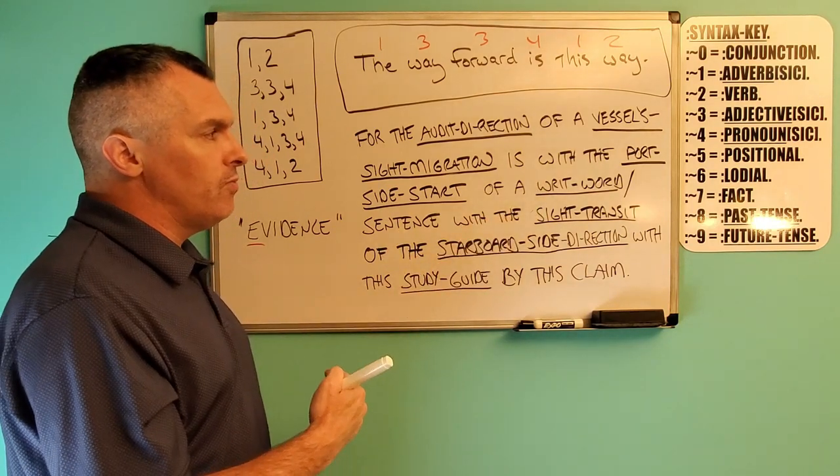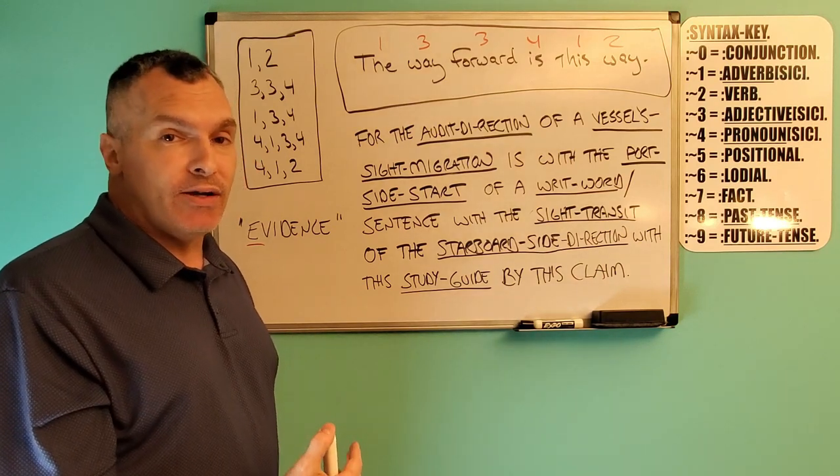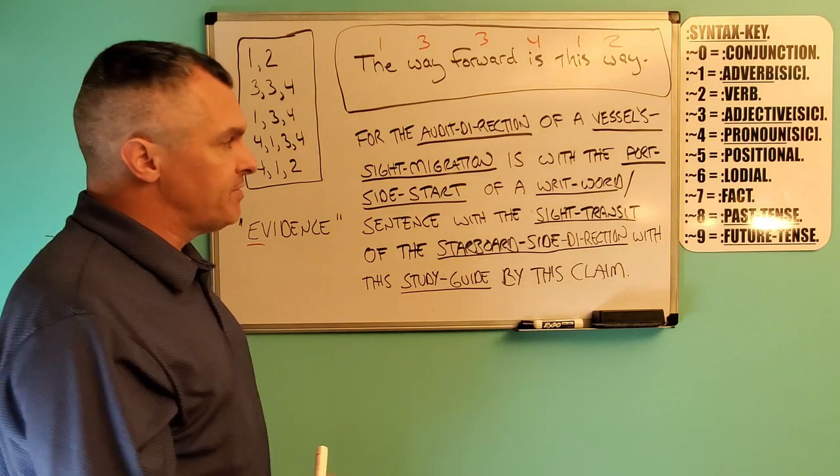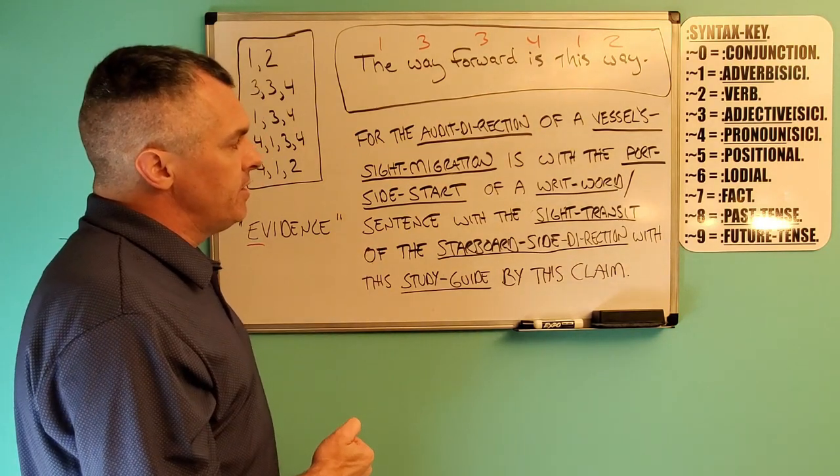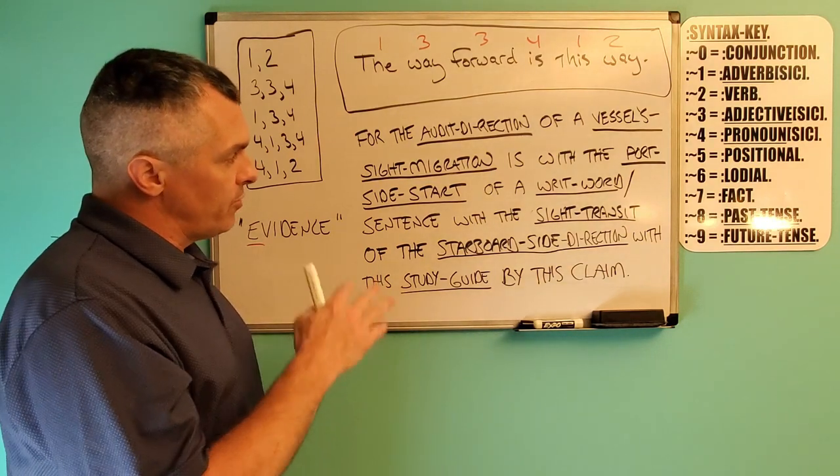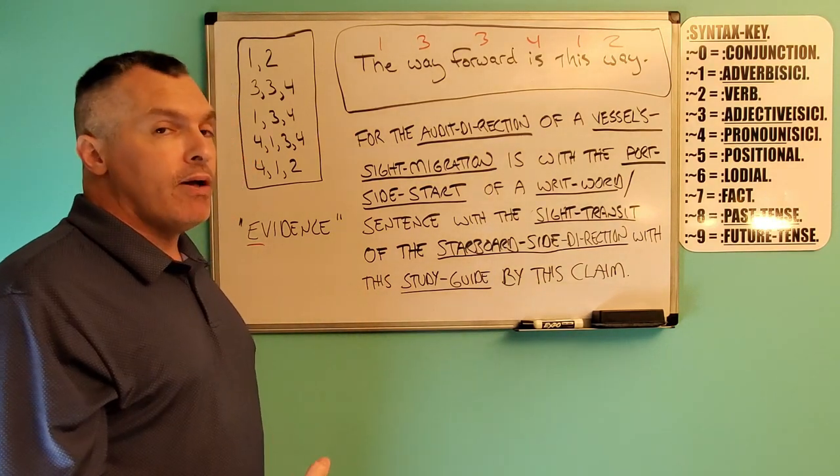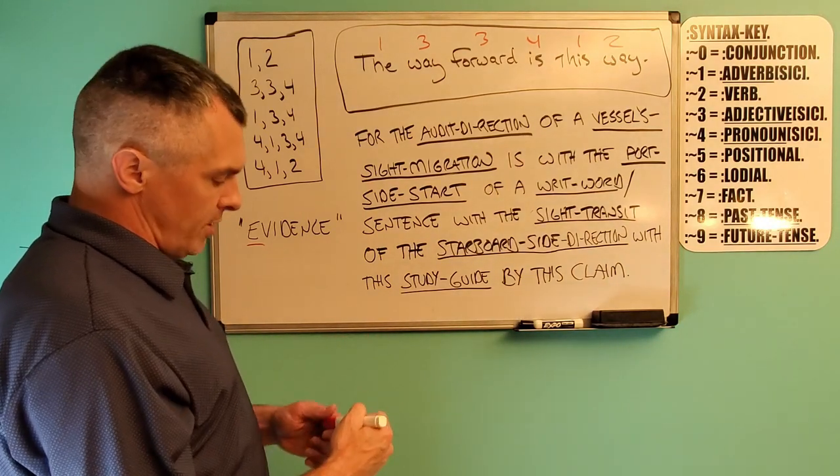The possessive with a writ word sentence. What is that sentence or writ word concerned with? The port side start, meaning it's where you start. You start on the left side. With a vessel site migration by the audit direction, which then becomes the authority of the whole thing. It's all about the direction we're reading. And this is closure on that direction.